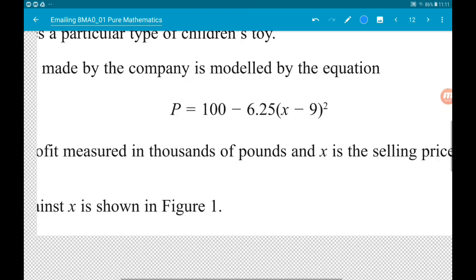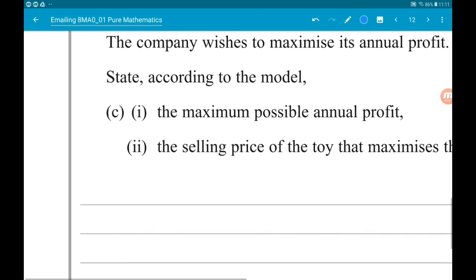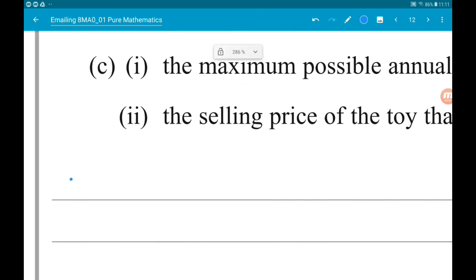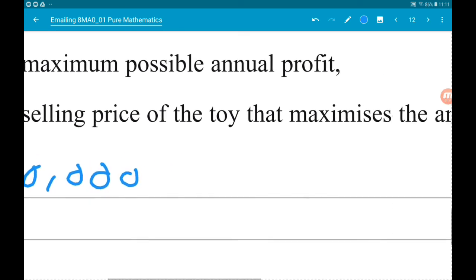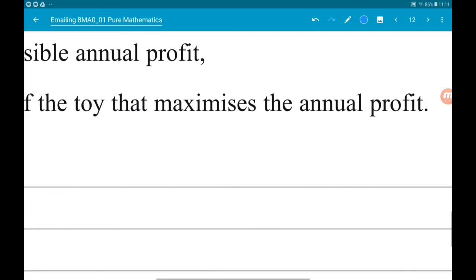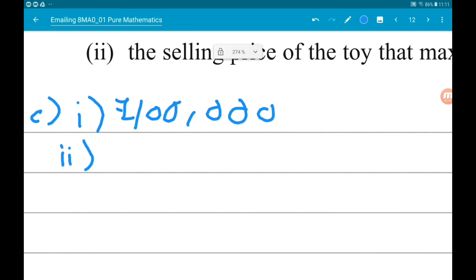So the maximum selling price, sorry, the maximum annual profit, for part 1, is 100,000 pounds. And for part 2, the selling price of the toy that maximizes the annual profit is 9 pounds. Go.